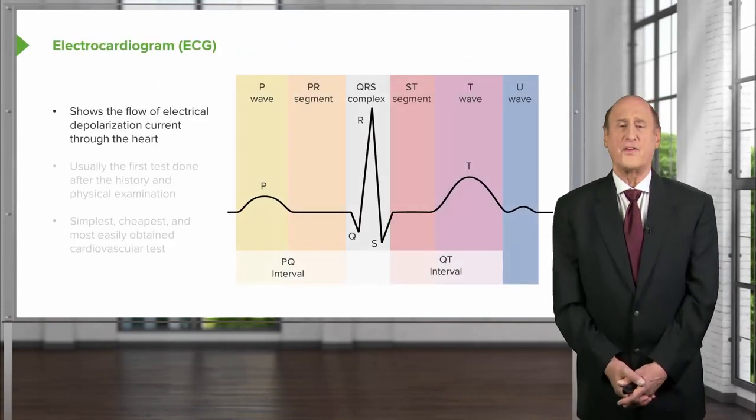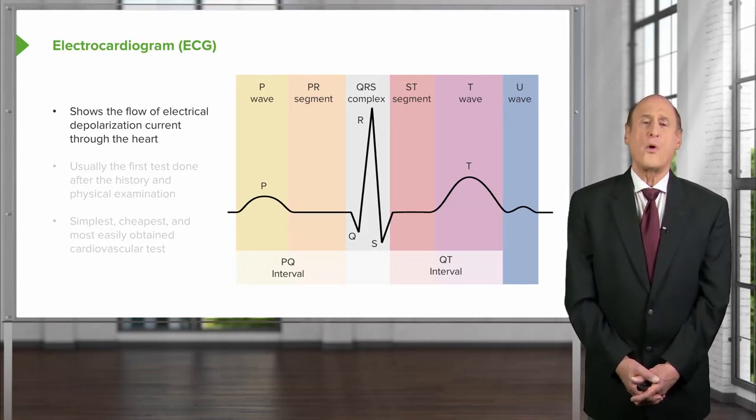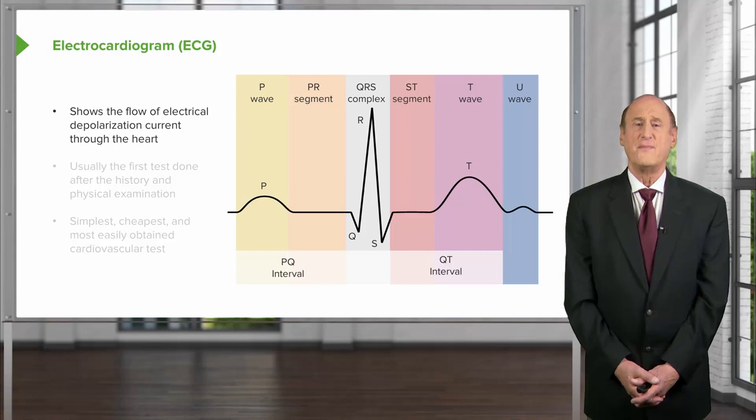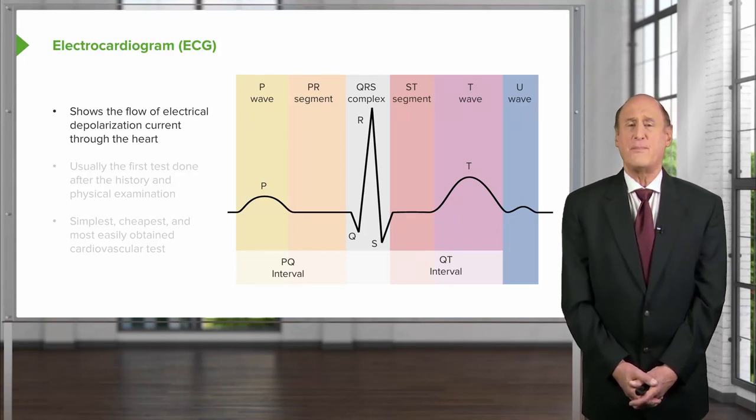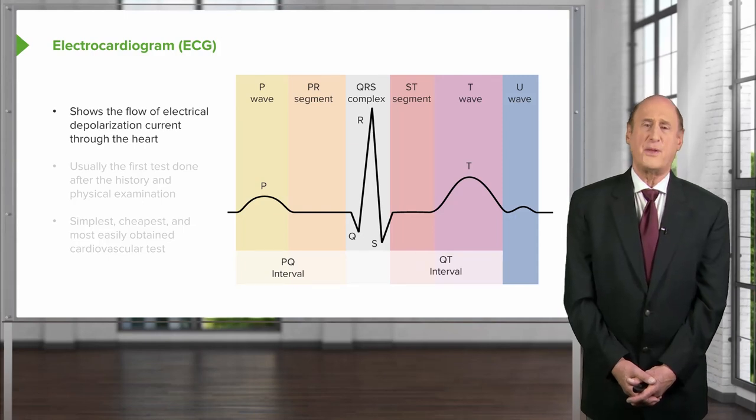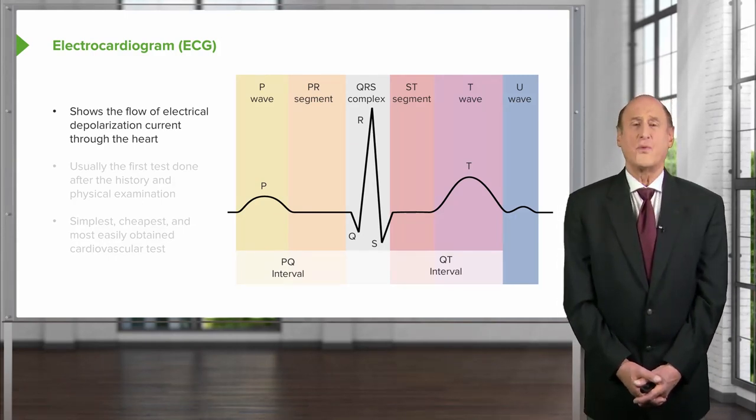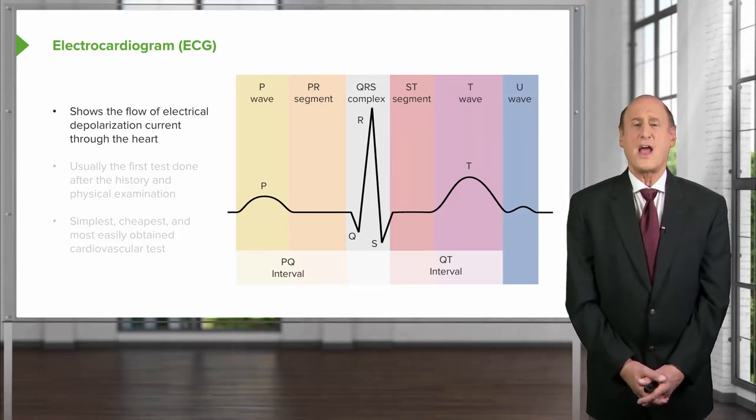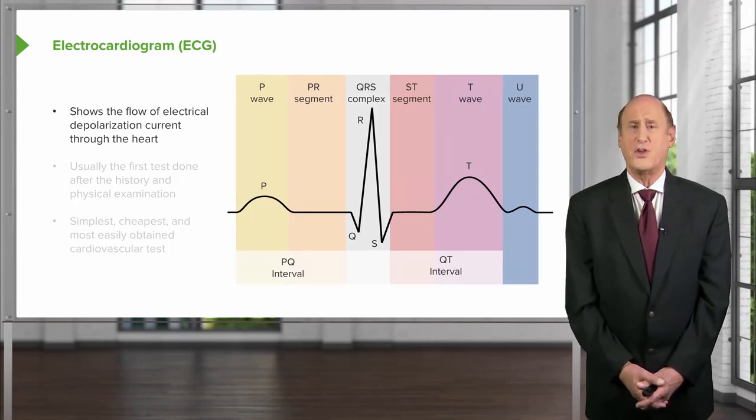So here again are the various segments. You'll notice that the so-called PR segment is the segment that runs all the way from the beginning of the P wave to the QRS. It's divided into two segments: the duration of the P wave and then the PR segment—that is from the end of the P wave to the beginning of the QRS. But for most daily reading of the electrocardiogram, we just call the PR segment the entire period from the beginning of the P wave to the beginning of the QRS.